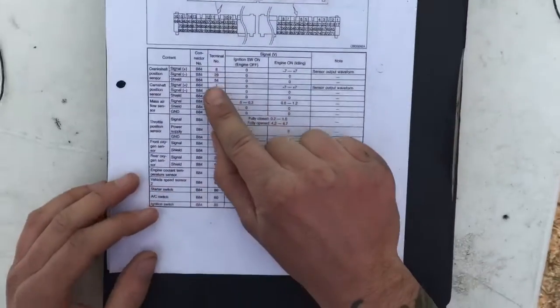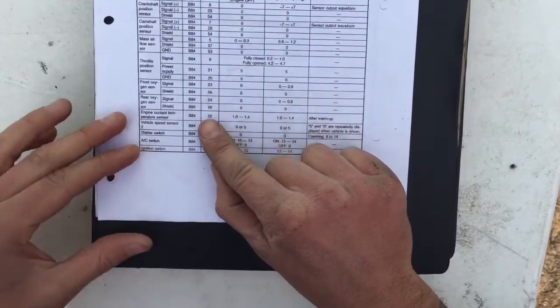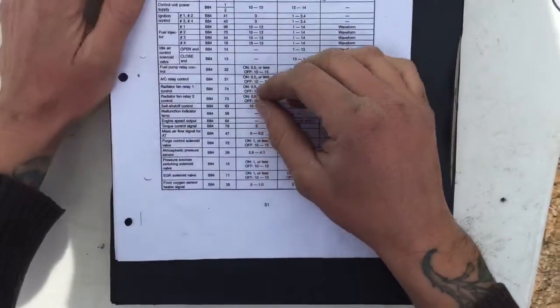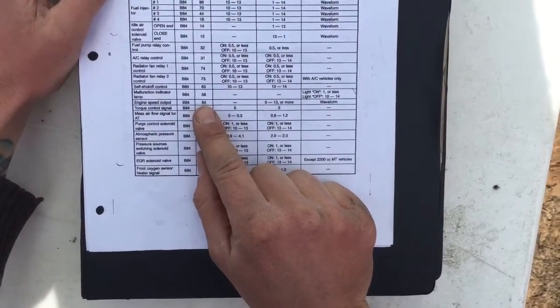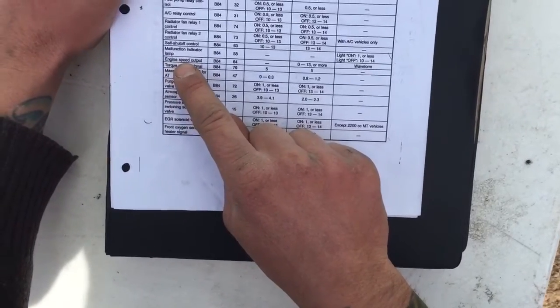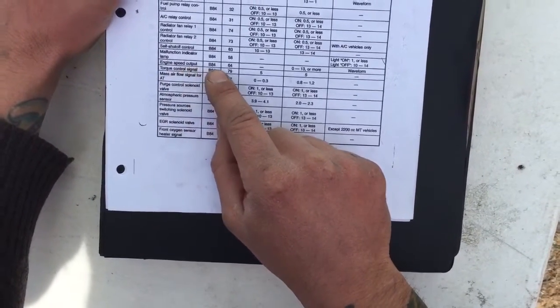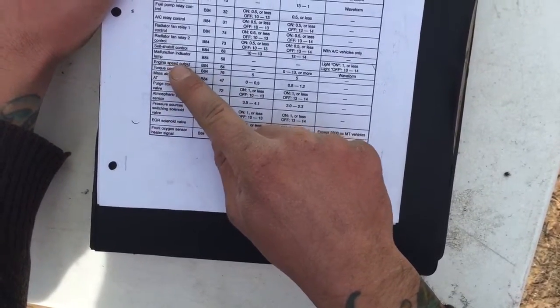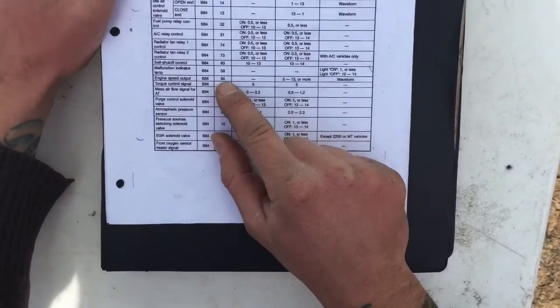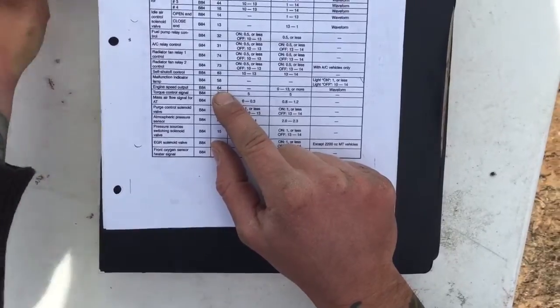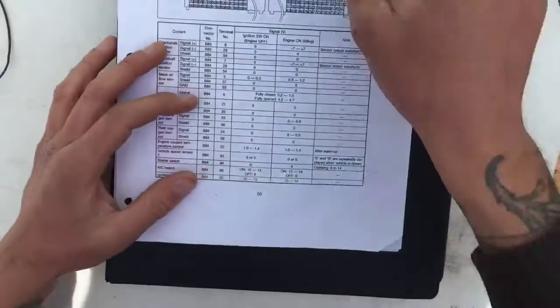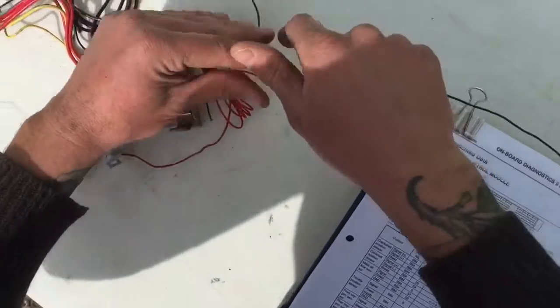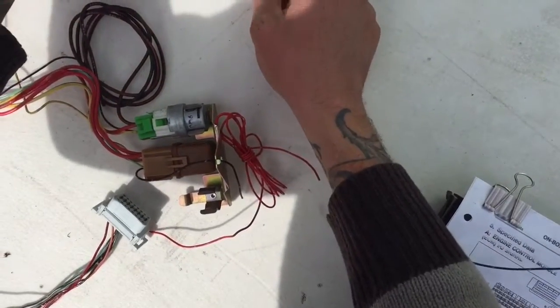We're just going to find it on our sheet here. There it is - 64. That is engine speed output, so that is the RPMs essentially, engine speed. So this is going to go to a tachometer.